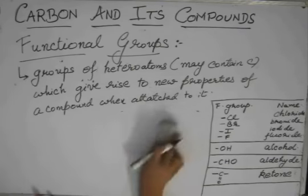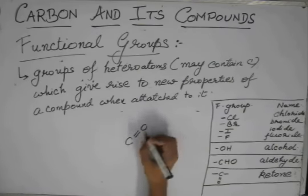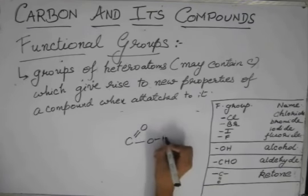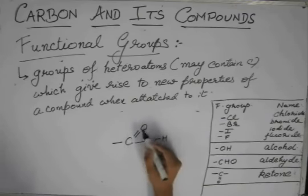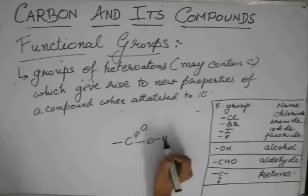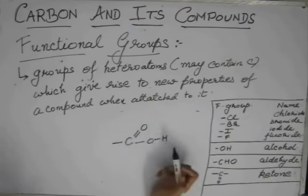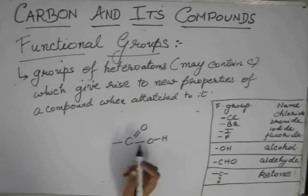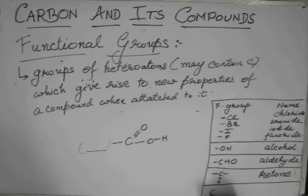And lastly, we have this. Oxygen has two valences satisfied. Oxygen has two valences satisfied. Hydrogen has one valence satisfied. Carbon has one, two, three valences satisfied. So this is vacant and this is bonded to the chain. So this group, which is called the COOH group, is called acid.